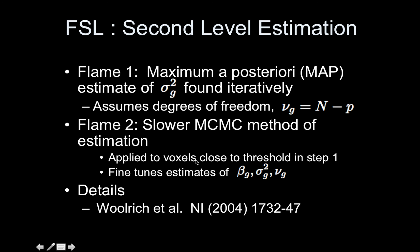It's a slower MCMC method of estimation and it's slow, so it's only applied to voxels that are close to the threshold in the first step and it fine-tunes all of these estimates including the degrees of freedom. If something's not even close to being significant, there's no reason to fine-tune the estimate. But again, since this is slow and I believe there are some issues with it, just stick with FLAME 1. It's typically what are used. If you want the details, I invite you to read this Woolrich paper from 2004. Good one.